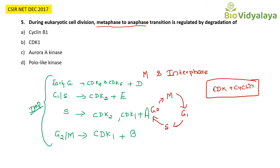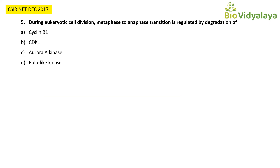Each cyclin is synthesized during its particular stage of the cell cycle and then breaks down. That breakdown is essential for the cell cycle to transition from one phase to the next. Now they are asking about metaphase to anaphase transition specifically.